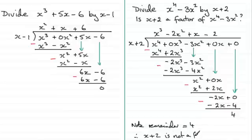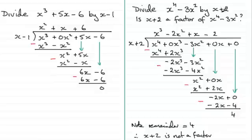Later on I'll be showing you a quicker way of determining whether something is a factor of a particular polynomial, rather than carrying out this long algebraic division method. It's called the remainder theorem — so you might like to check that one out.